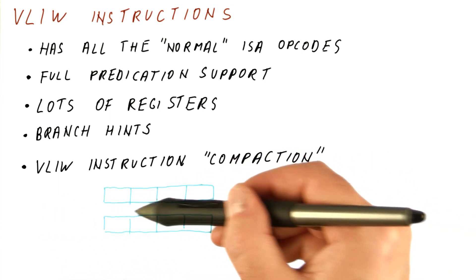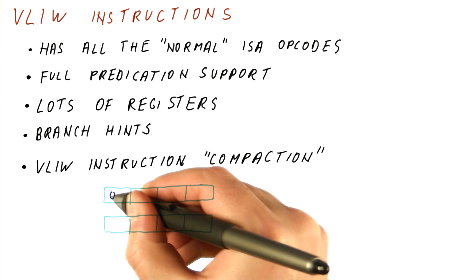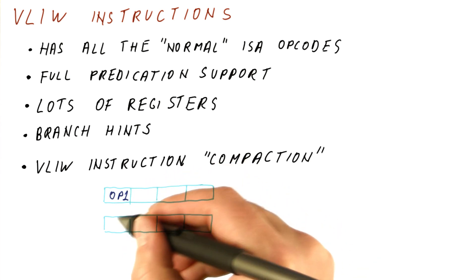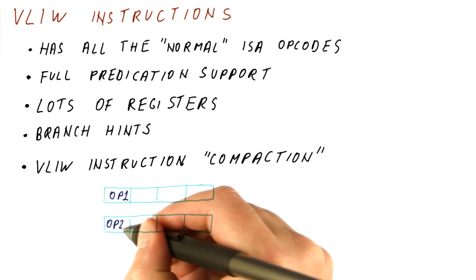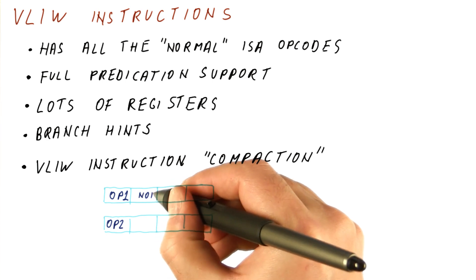For example, if we have a four-operation instruction and we have something like this, we do some operation and then the next operation needs to be here, and thus we have to put NOPs in here.